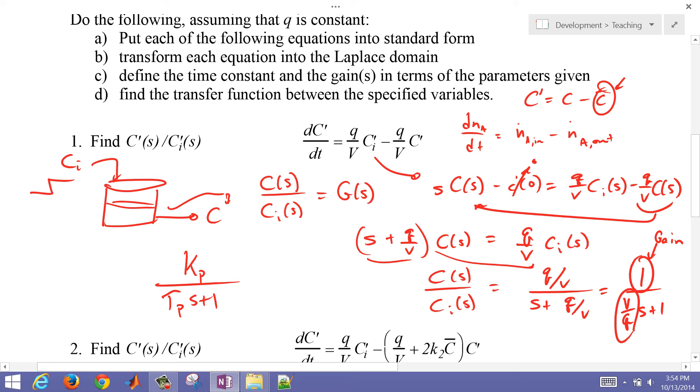And then this is my time constant, the volume divided by the flow rate. So as I increase the volume, my time constant or the amount of time that it takes for that change to happen is going to increase. As I also increase my flow rate, that time constant is going to decrease. So we've put each of them into a standard form.